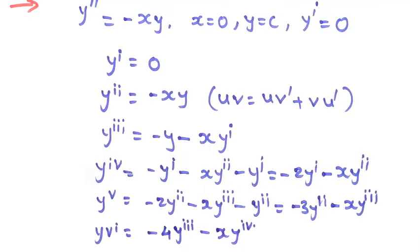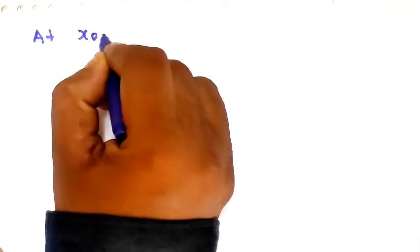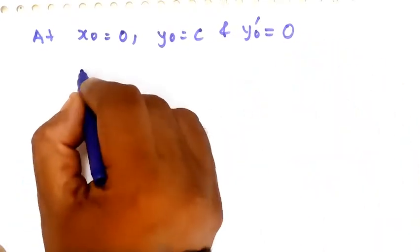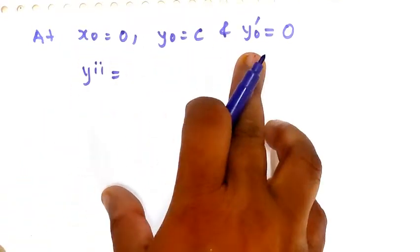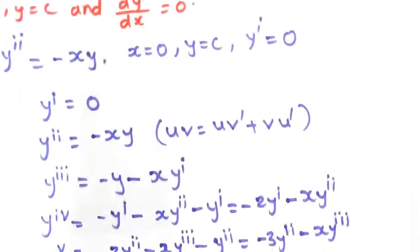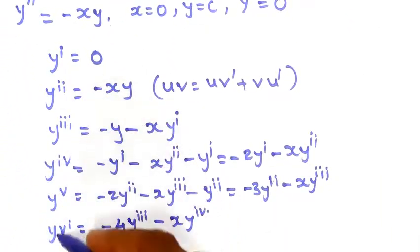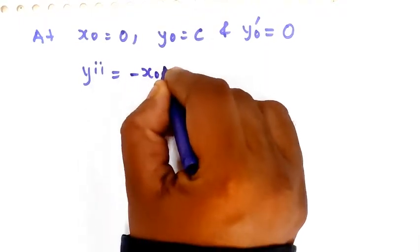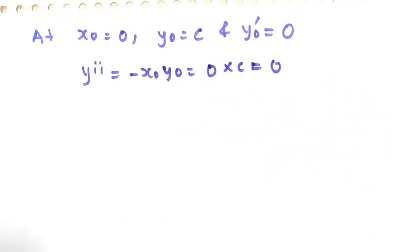Now substitute the initial conditions at x₀ = 0, y₀ = c, and y′₀ = 0 into the derivative expressions. First, y₂ = -x₀·y₀ = -(0)(c) = 0. Next, y₃ = -y₀ - x₀·y₁ = -c - 0 = -c.